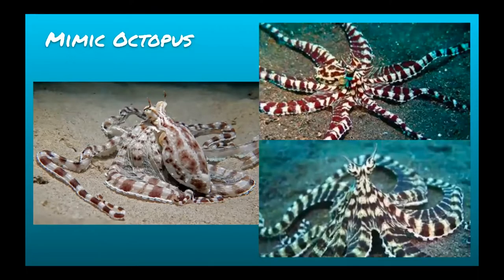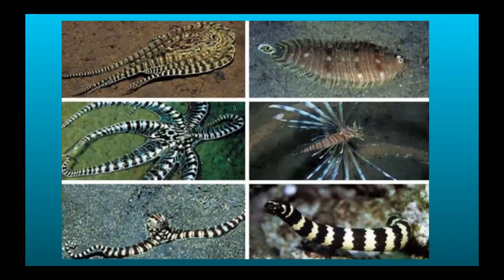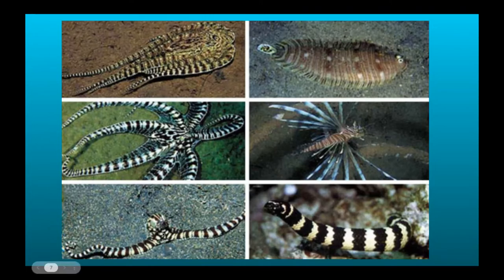Then there's the mimic octopus, native to Indonesia. It can be up to 60 centimeters wide, and it gets its name from its ability to mimic or imitate other sea creatures. It can imitate a flatfish that lays under the sand, change its shape and texture to appear as that fish. It can also imitate the lionfish, and most impressively, it can impersonate sea snakes or eels.